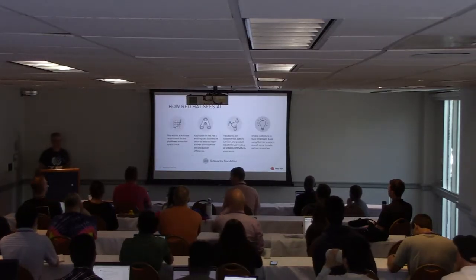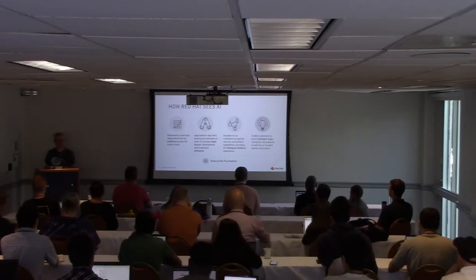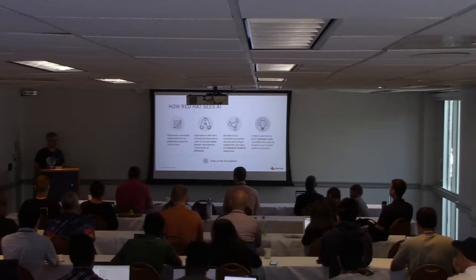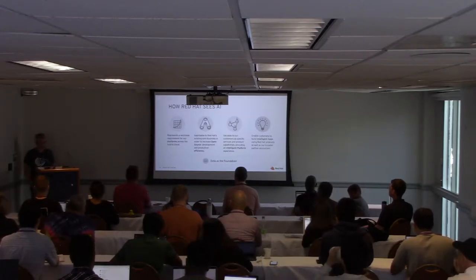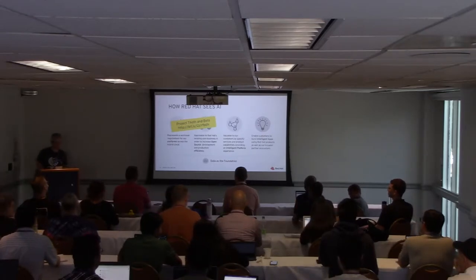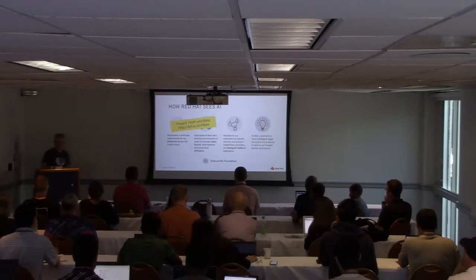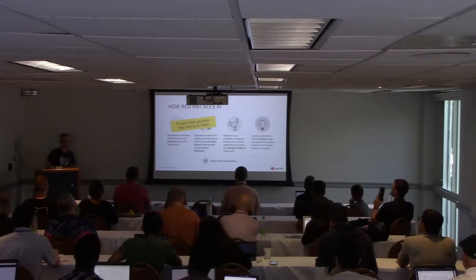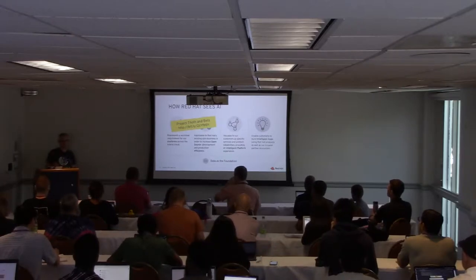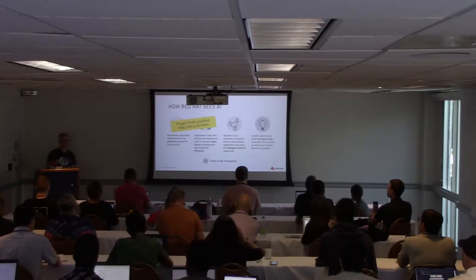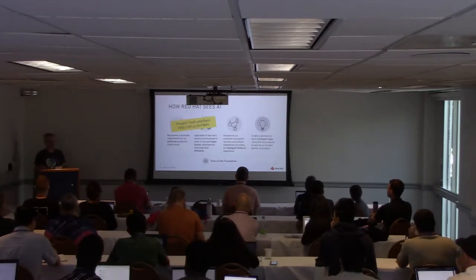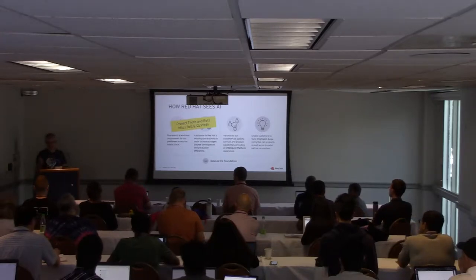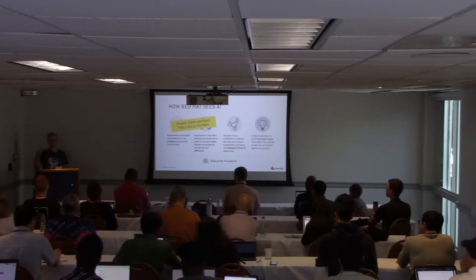I'd also like to level-set how Red Hat sees AI, because Red Hat is usually an infrastructure provider. First and foremost, we want to make sure that AI workloads run really well on top of the infrastructure and platform we provide. One of the projects here is Project TOF, where we look into optimizing AI stacks. One cool thing they're doing is recompiling TensorFlow just for your individual machine — by recompiling it with the correct flags, we can squeeze out 10 to 15% more performance.